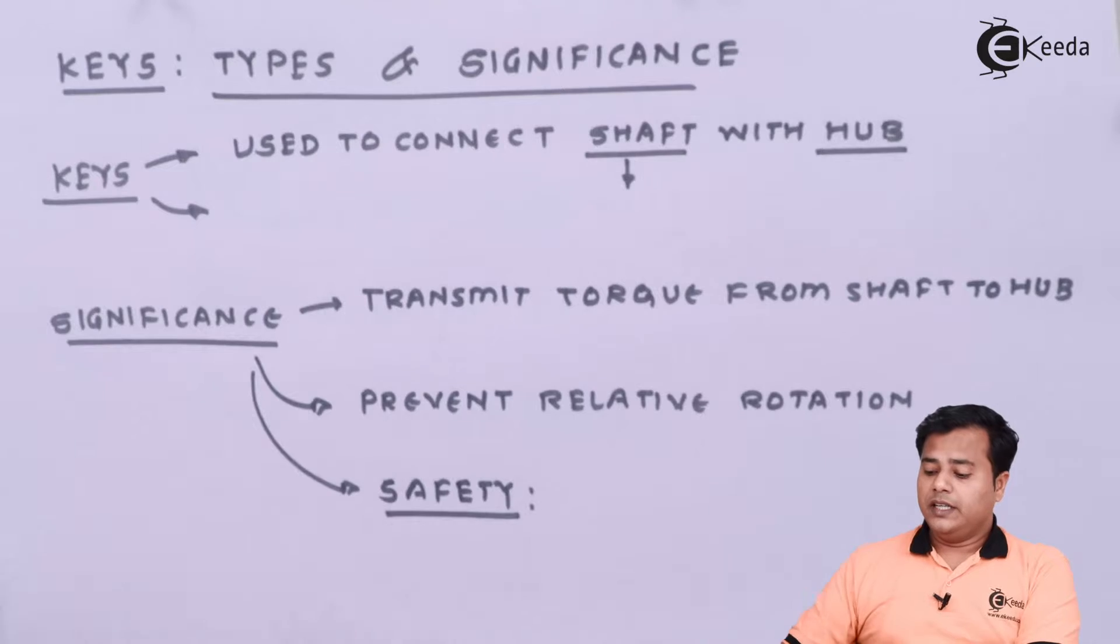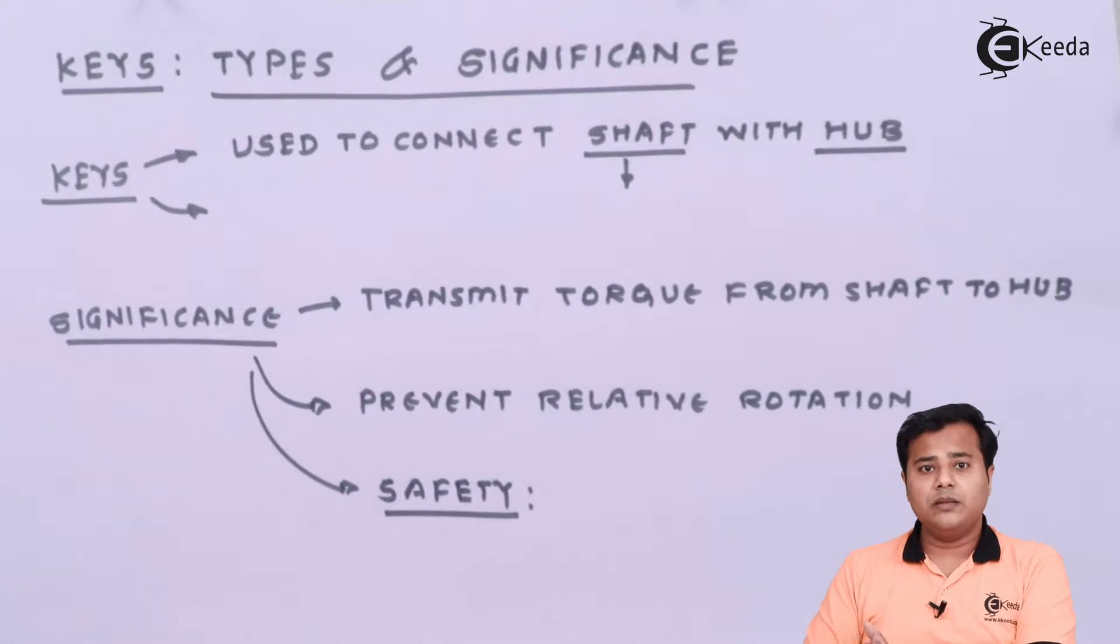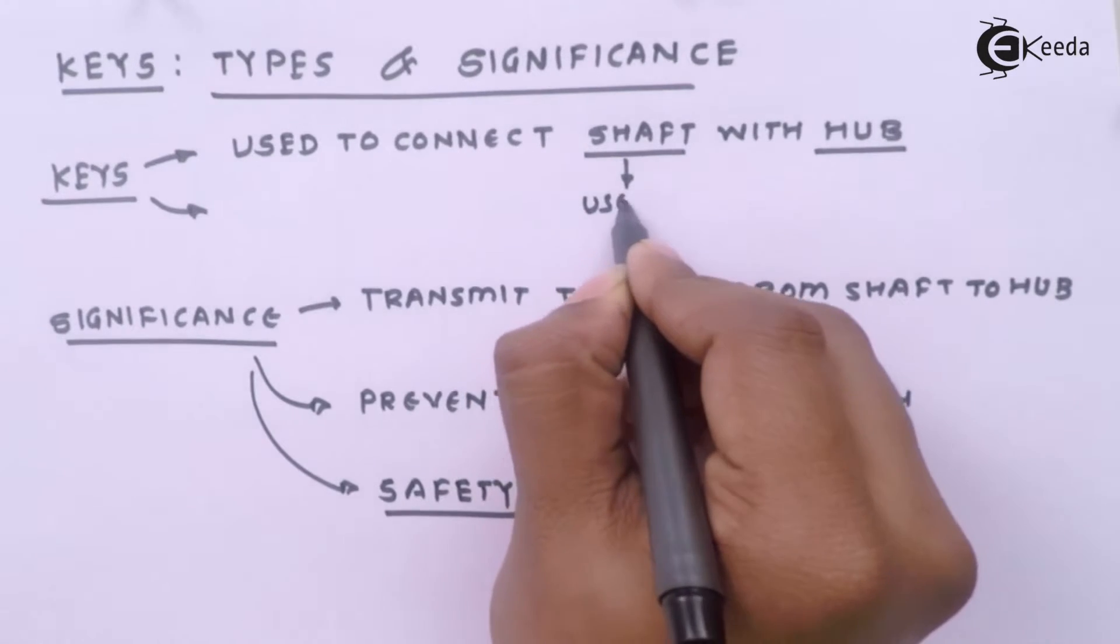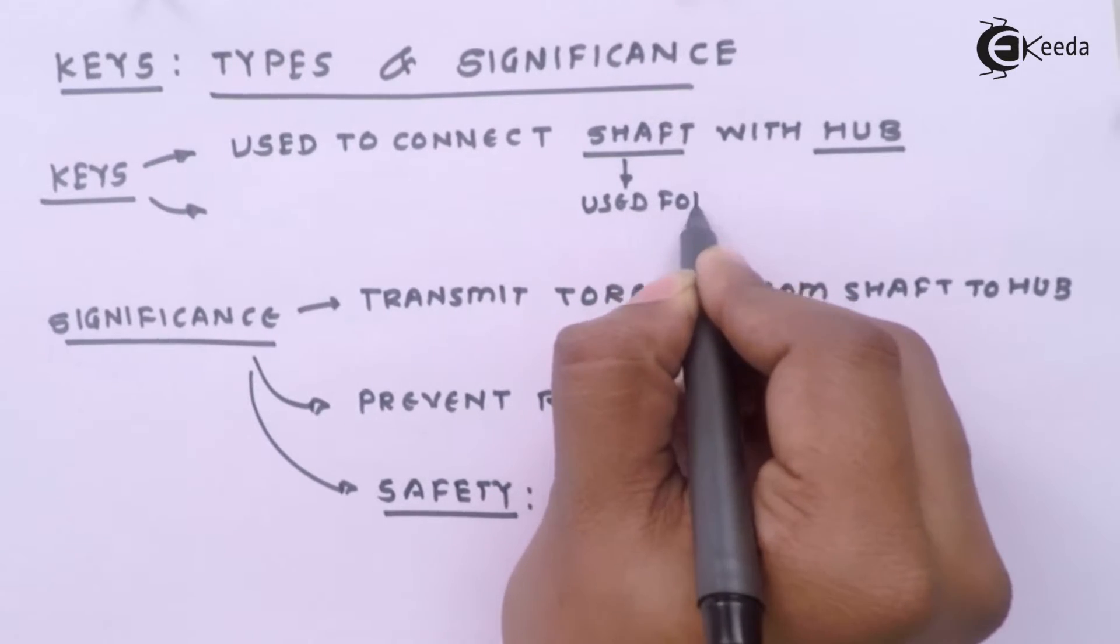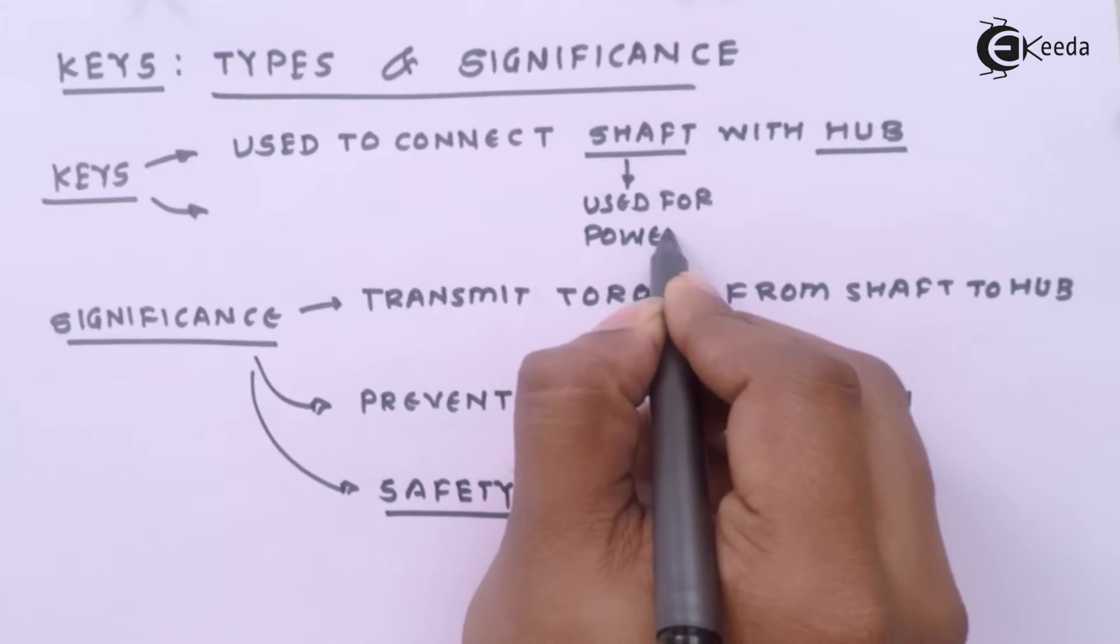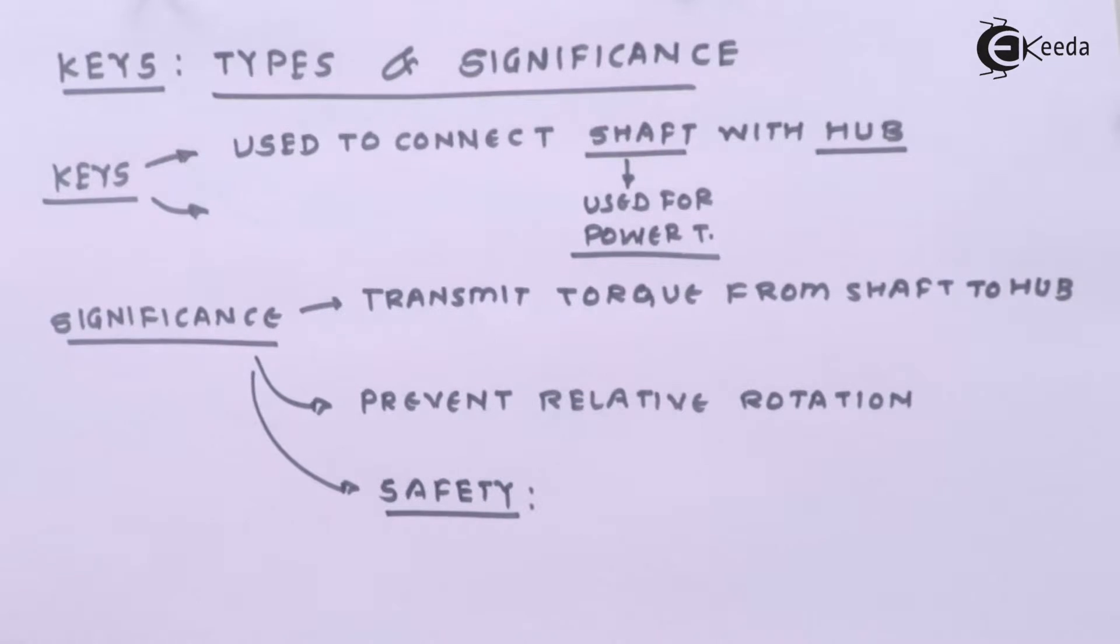Keys is nothing but used to connect shaft with hub. It is a mechanical member that is used to connect shaft with hub. Shaft is the member that is used for power transmission. Power can be transmitted to the shaft by means of motor.